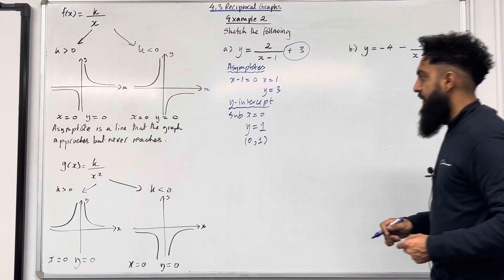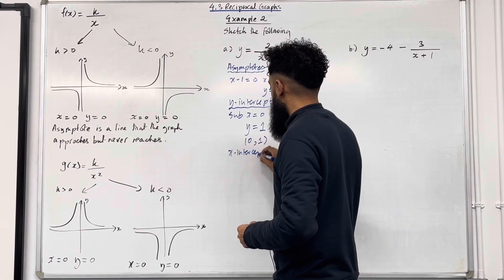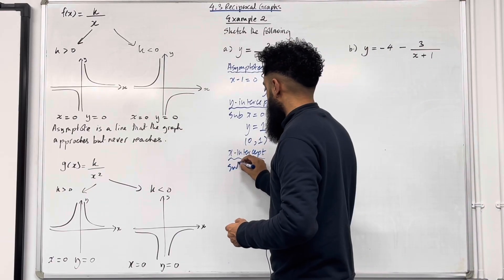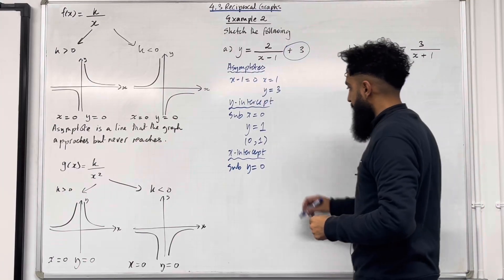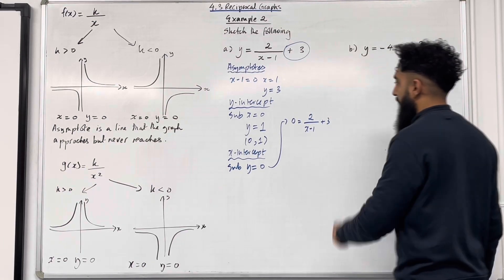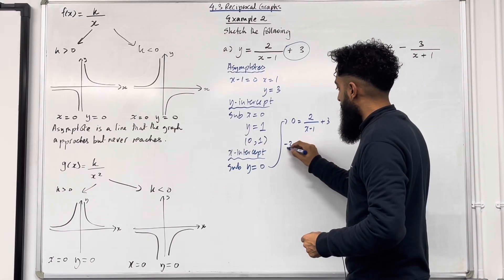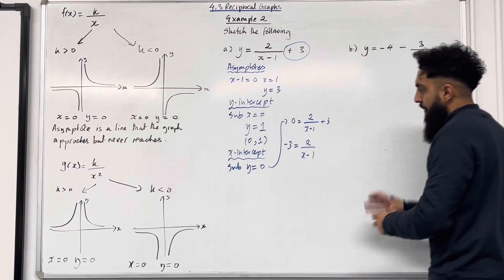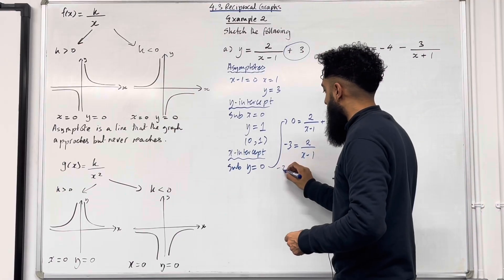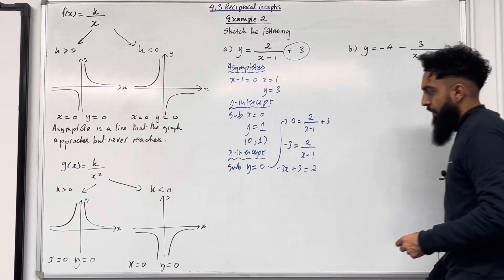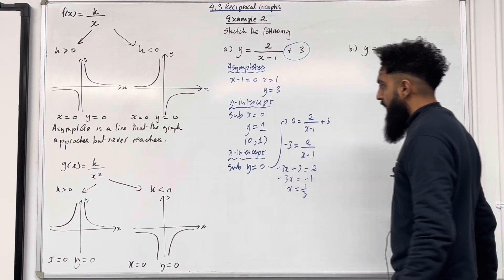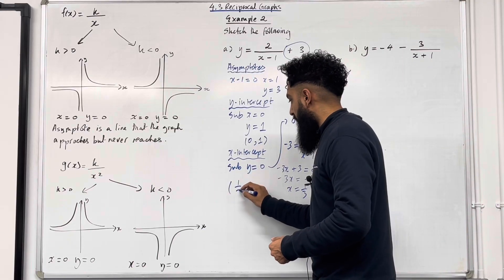For the x intercept, substitute y equal 0. Replacing y with 0: 0 equals 2 over x minus 1 plus 3. Take positive 3 to the left-hand side, giving minus 3 equals 2 over x minus 1. Rearranging by multiplying out: minus 3x plus 3 equals 2, so minus 3x equals minus 1, hence x equals one third. So my x intercept is (1/3, 0).